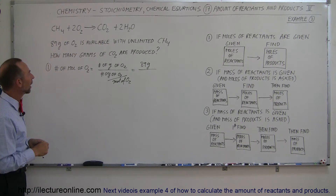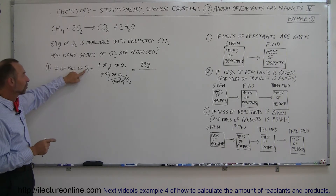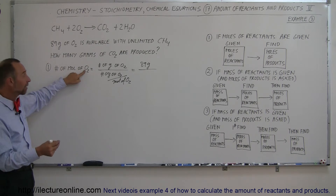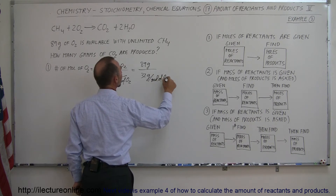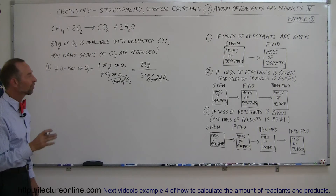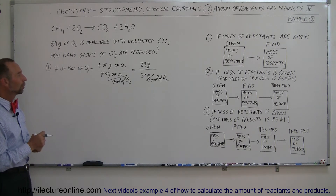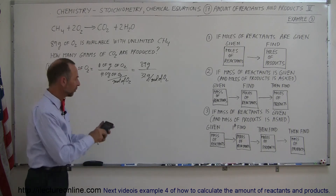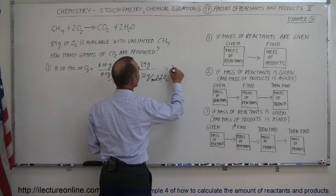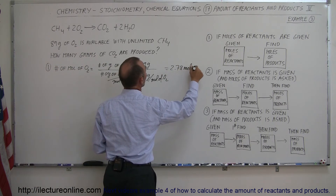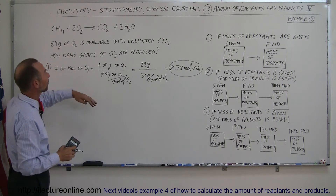How many grams of oxygen go into a mole of oxygen? Oxygen is a diatomic molecule. Each atom has a mass of 16 grams, so two of them will be 32 grams per mole of oxygen — 16 grams per mole of a single oxygen atom, and since oxygen is diatomic, 32 grams total. So we get 89 divided by 32, and we end up with 2.78 moles of oxygen — the limiting reactant, since we have an unlimited amount of methane.